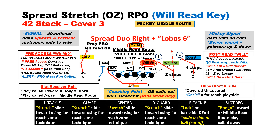Let's look at a couple core RPOs that we can run with quarterbacks that aren't necessarily dual-threat running quarterbacks. I like to go outside in, so we look at our stretcher outside zone going to the left. If it comes towards the S, he'll go ahead and block. Everything's exactly the same as we would do with our H-back package with our Mickey post-snap read to the right. And then we've got the pray for a post to the play side.